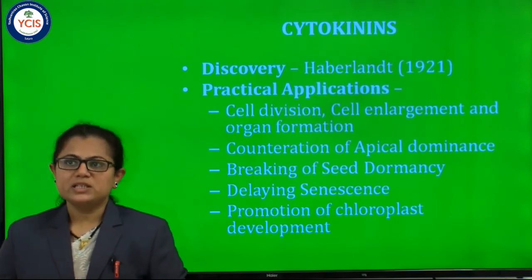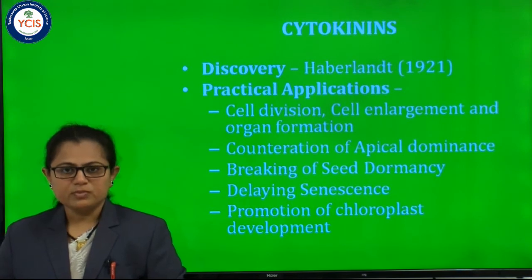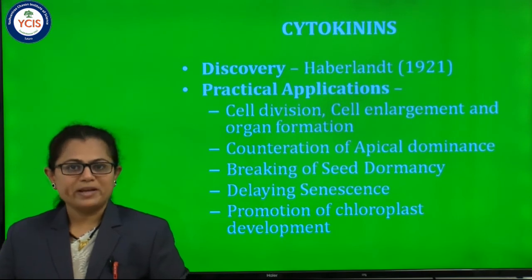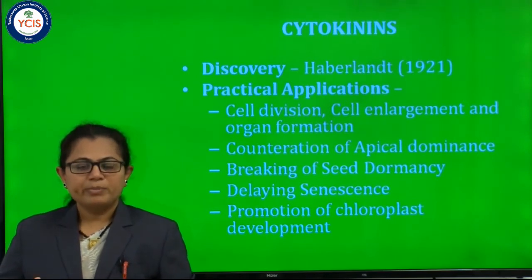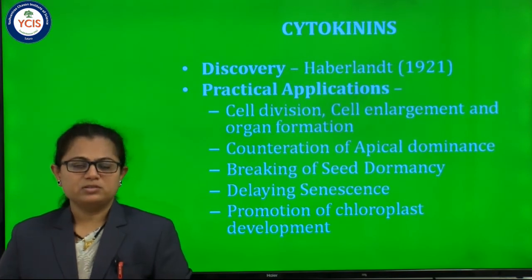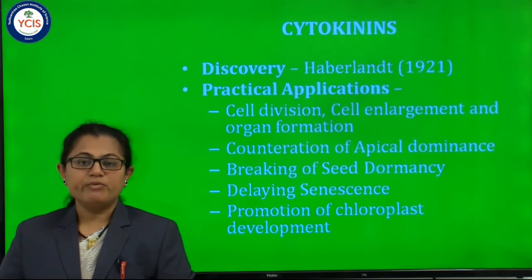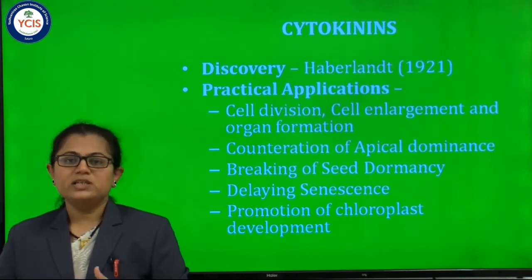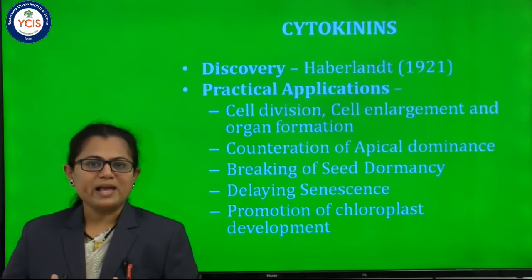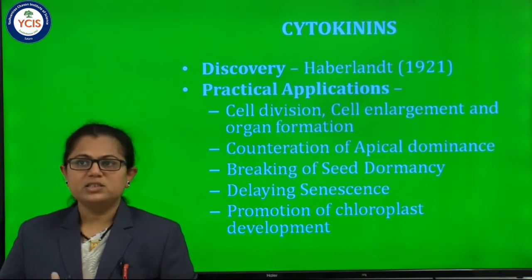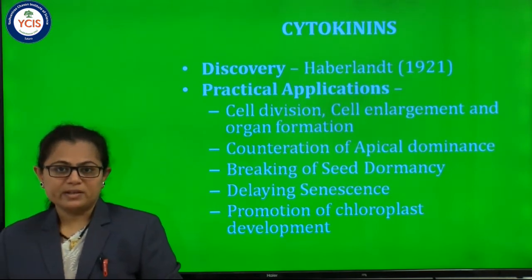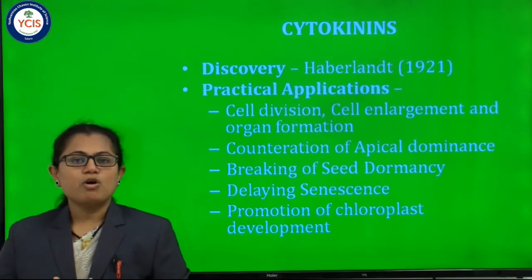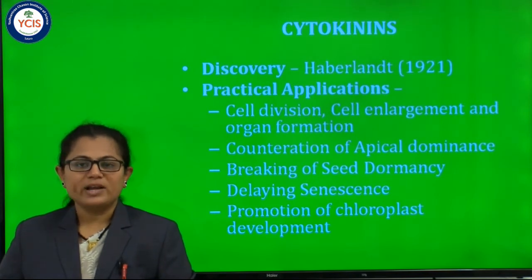Next application of cytokinin is cancellation of apical dominance. Cytokinin is used in the cancellation of apical dominance. When the apical bud shows dominance, it prevents the production and growth of lateral buds. When plants are treated with cytokinin, the plants show a number of lateral buds, because cytokinin increases the vascular supply to the lateral buds, resulting in their growth. This is the cancellation of apical dominance. Next is the breaking of dormancy — there is promotion of germination by using cytokinin.